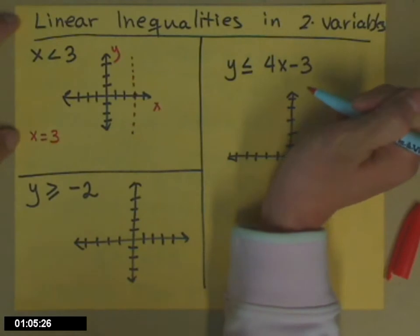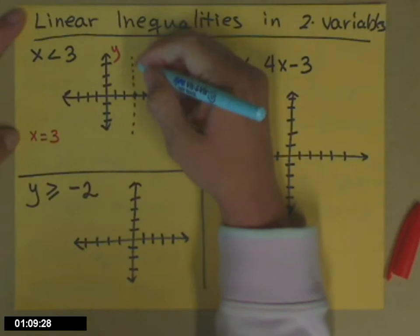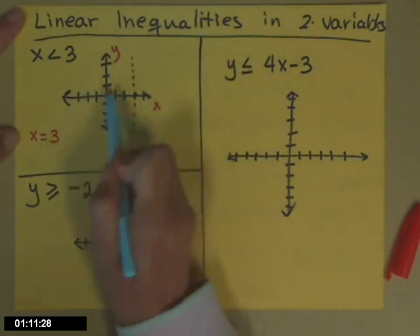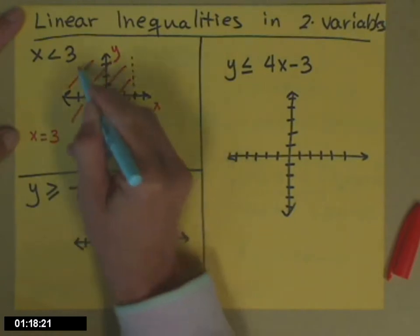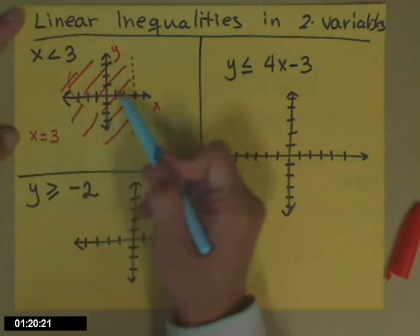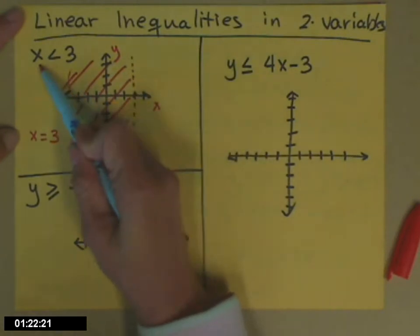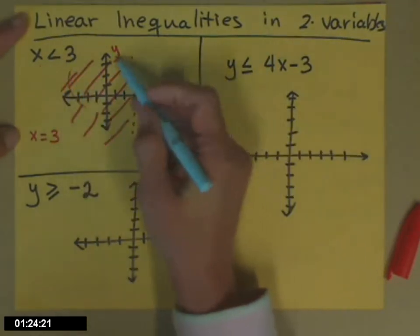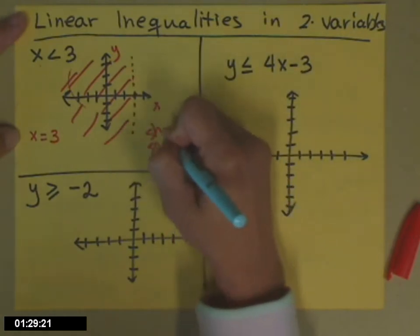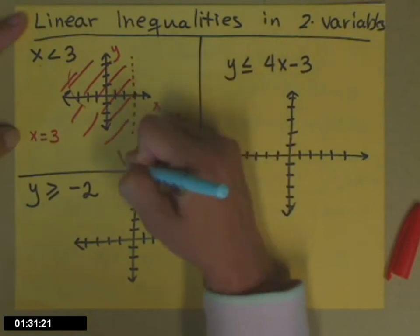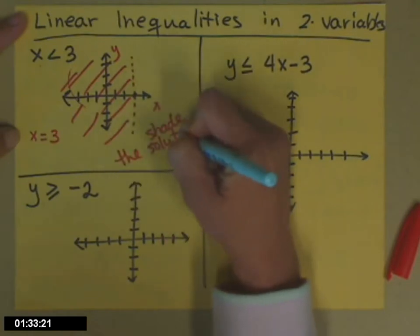And then we use shading to indicate the solution set. So the dotted line says not these guys, but x is less than that. So less than goes to the left. So any x's over here, any point in this shaded region has an x that's less than 3. So this shaded section represents the solution set.